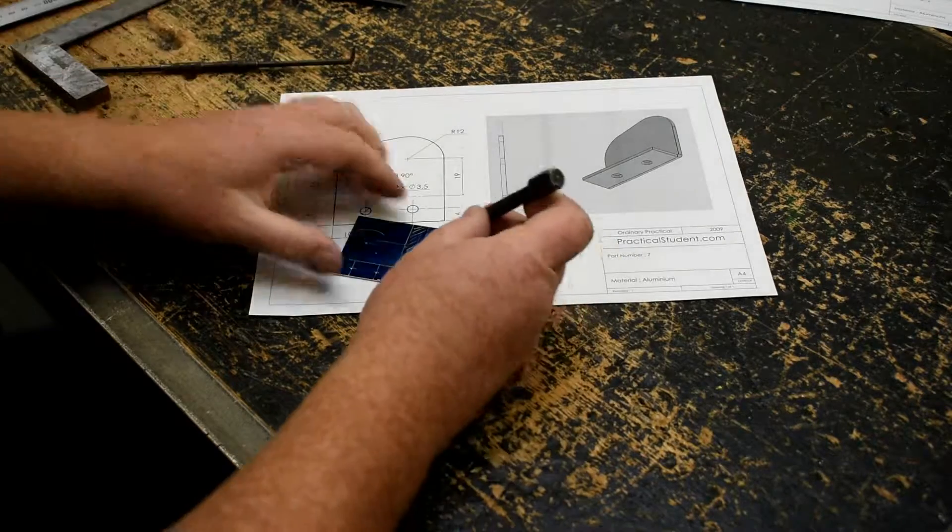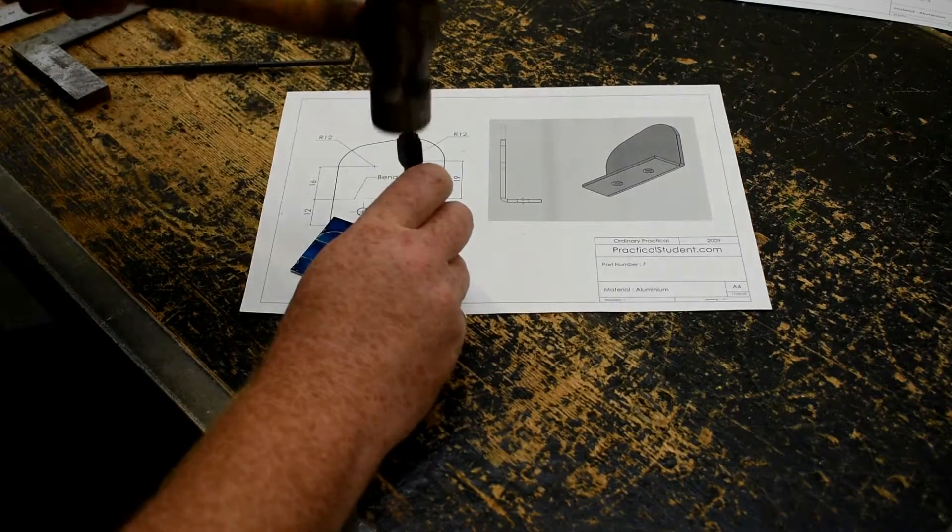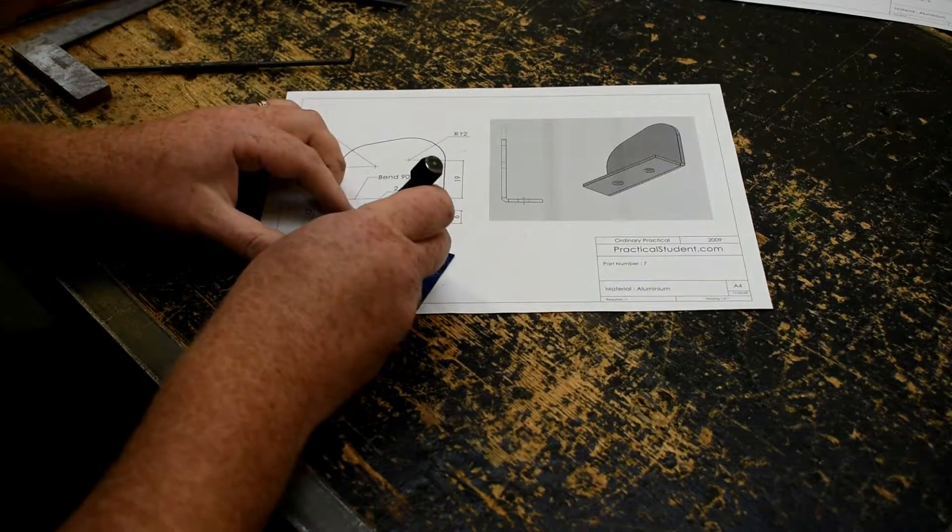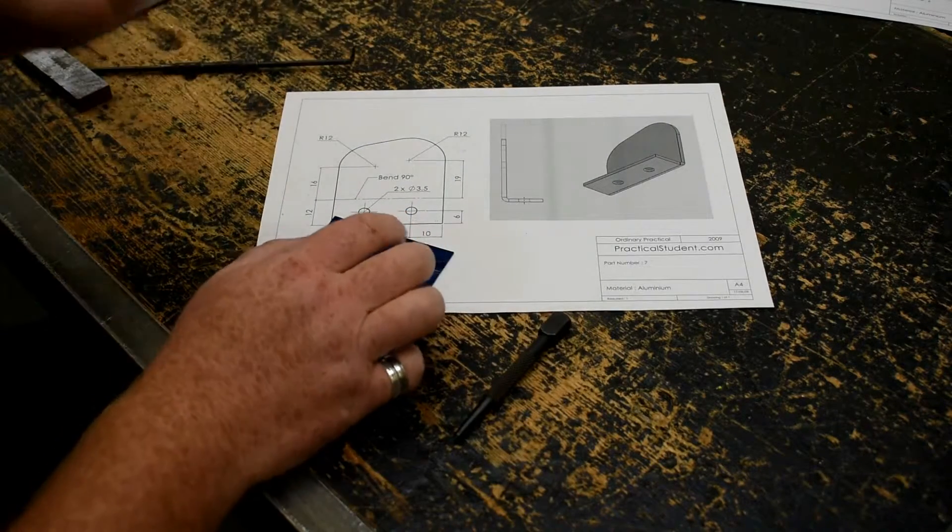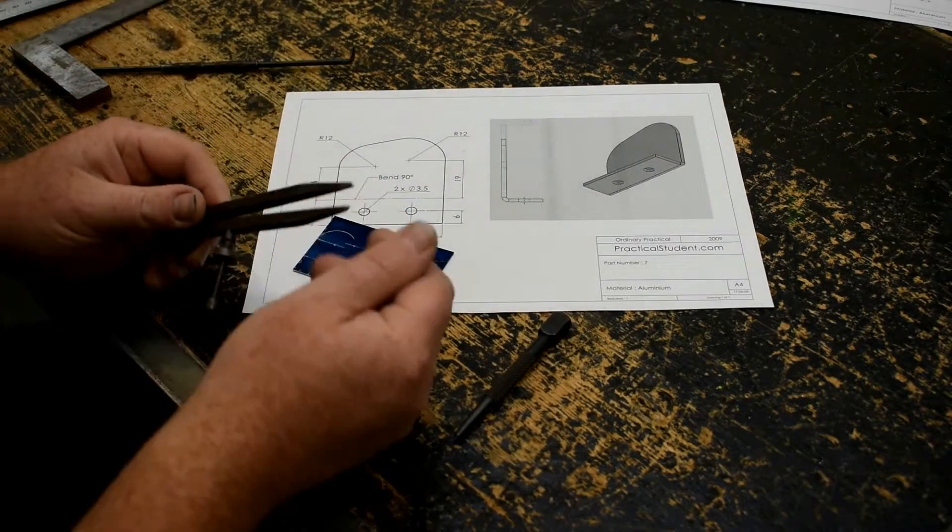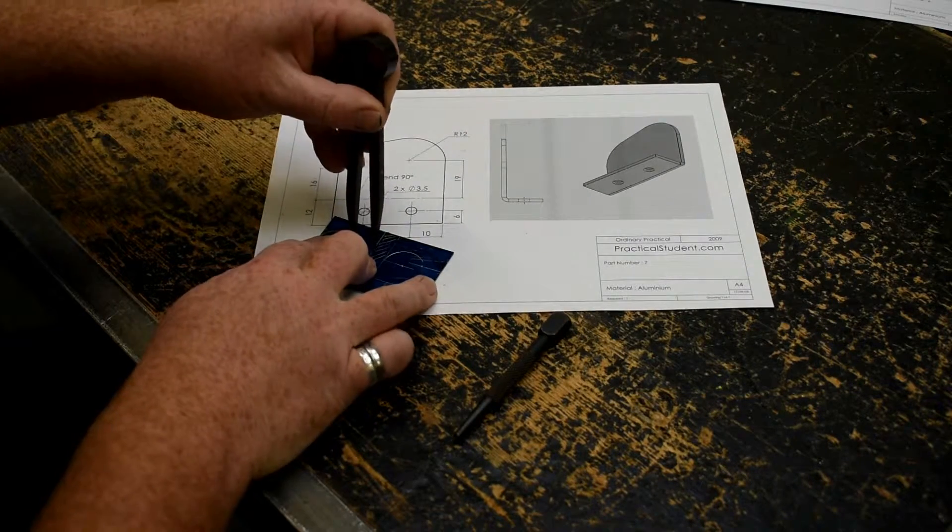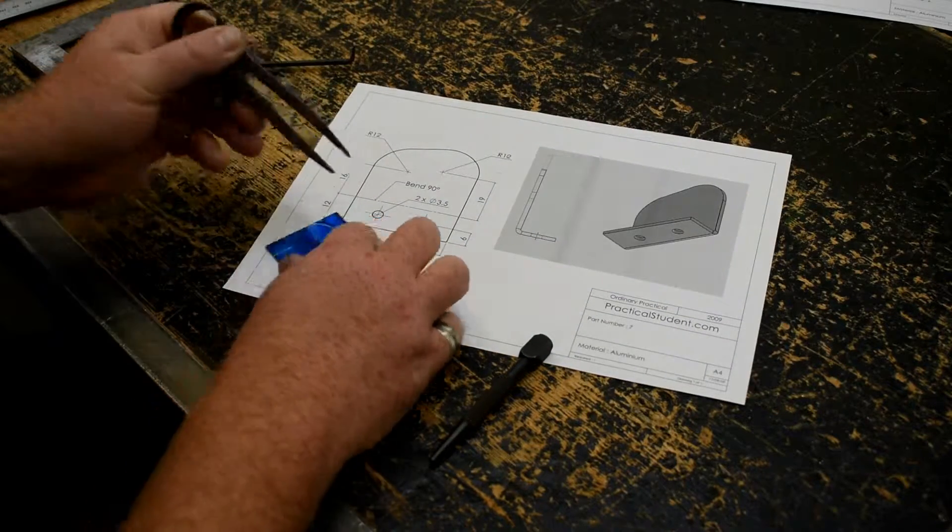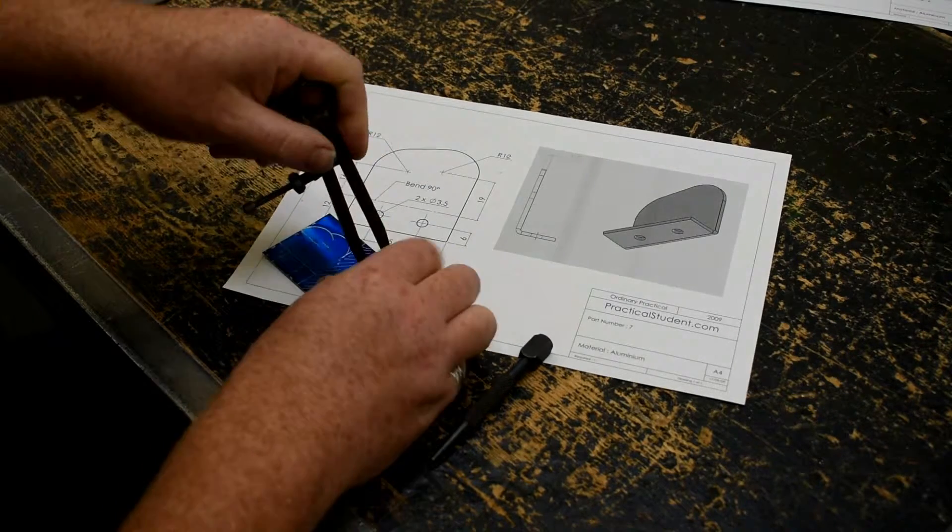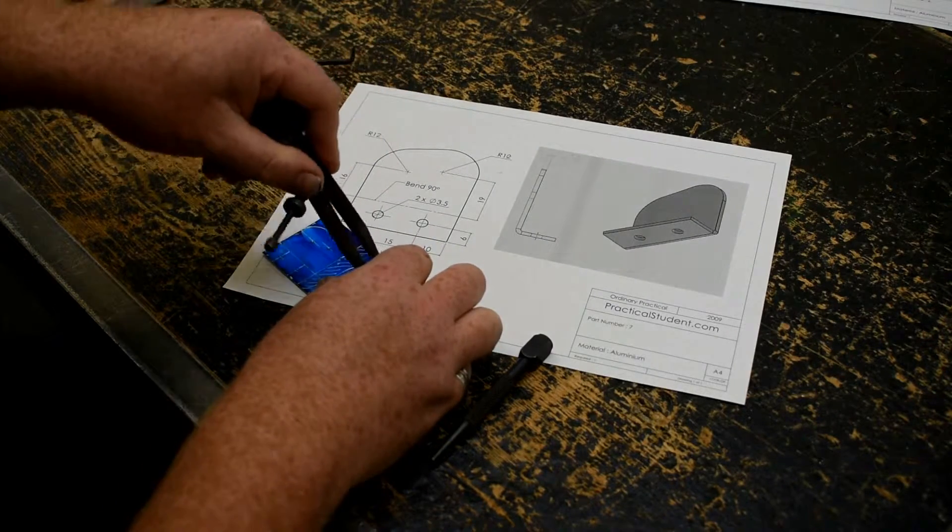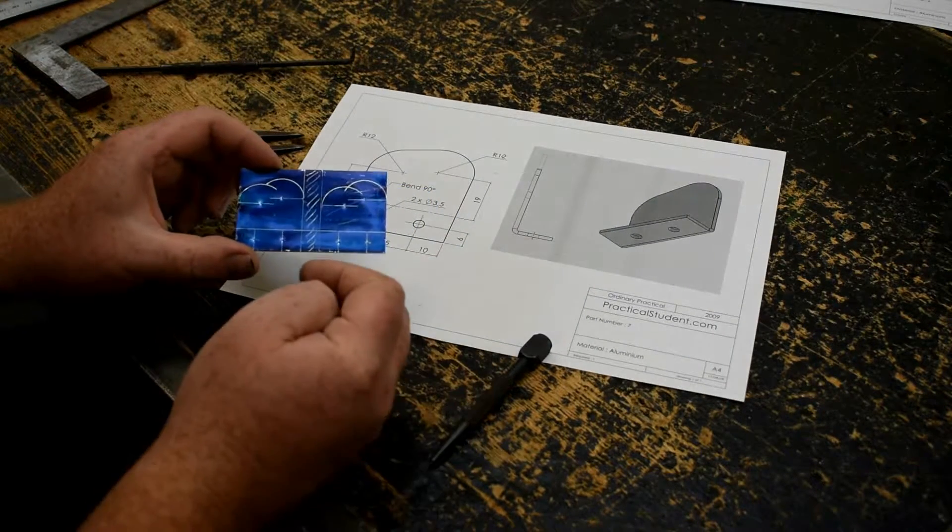Again, I'm going to punch both points. Once again, so long as we haven't adjusted the dividers, we know it's set at 12, so we can just draw partial circles here as well. At this stage, you've got the thing almost marked out.